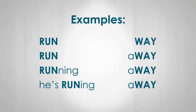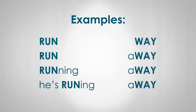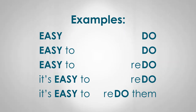Let's look at some examples. Read each line below with the idea that you only get two beats to complete the entire statement: 'Run away. Run away. Running away. He's running away.' Here's another example that should fit into two beats: 'Easy to do. Easy to do. Easy to redo. It's easy to redo. It's easy to redo them.'